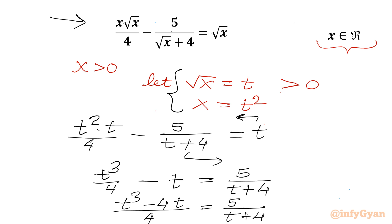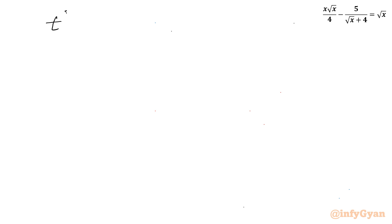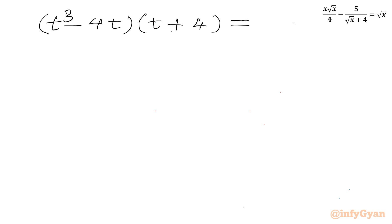Now t is positive, so the denominator cannot be 0 and I can cross multiply. So (t³ − 4t)(t + 4) equal to 5 times 4, which is 20.